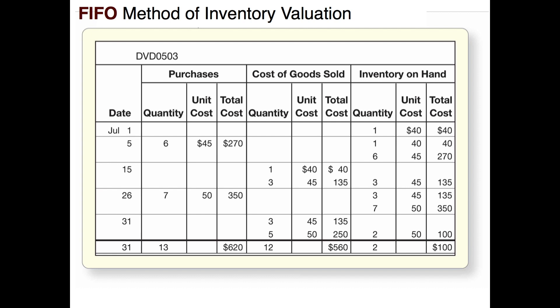So we sold four items; the total cost of that sale was $175, which is the $40 for the one item from beginning inventory and $135 from the three items from the July 5th purchase. Now we have three items left in ending inventory — none from beginning inventory and three remaining from that July 5th purchase of six at $45, leaving us $135 in ending inventory.